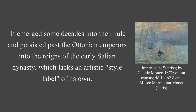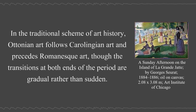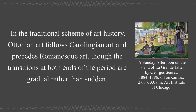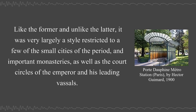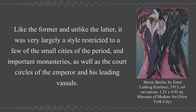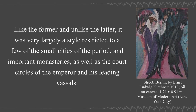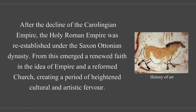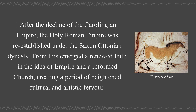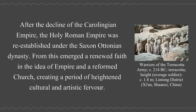Ottonian art emerged some decades into their rule and persisted into the reigns of the early Salian dynasty. In the traditional scheme of art history, Ottonian art follows Carolingian art and precedes Romanesque art, though the transitions at both ends are gradual rather than sudden. After the decline of the Carolingian Empire, the Holy Roman Empire was re-established under the Saxon Ottonian dynasty. From this emerged a renewed faith in the idea of empire and a reformed church, creating a period of heightened cultural and artistic fervor.